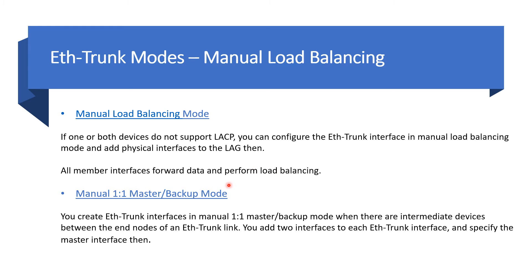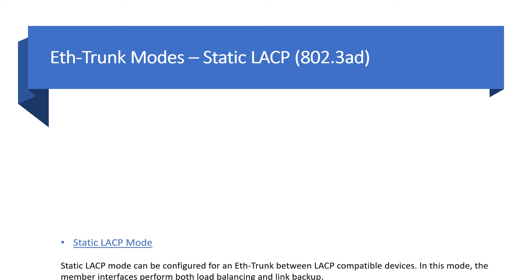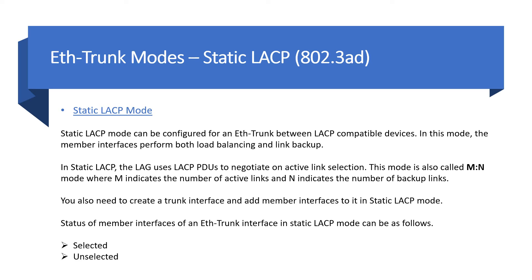There is also a manual master backup mode, which is required where there are intermediate devices between the end nodes of an Ethernet trunk link. You add two interfaces to each Ethernet trunk interface and specify the master manually. The most common mode, however, is static LACP mode. If both devices are LACP-compatible, we configure a static LACP mode where member interfaces perform both load balancing and link backup, and LACP PDUs are negotiated for active link selection. This mode is called M:N, where M is the number of active links and N is the number of backup links.